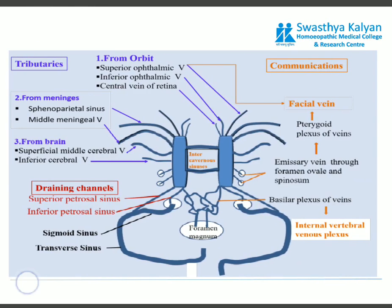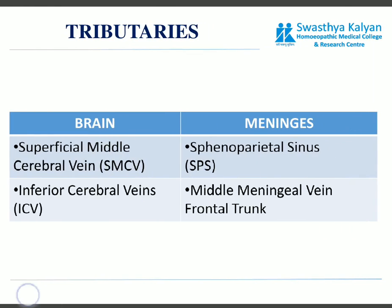This figure shows tributaries from different sources — the orbit, meninges, and brain — draining into the cavernous sinuses. Between the two cavernous sinuses there are the anterior and posterior intercavernous sinuses. Tributaries from the brain include the superficial middle cerebral vein and inferior cerebral veins. From the meninges there is the sphenoparietal sinus and the middle meningeal vein, especially the frontal trunk of the middle meningeal vein.